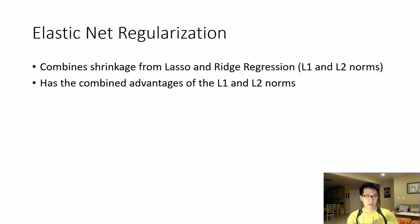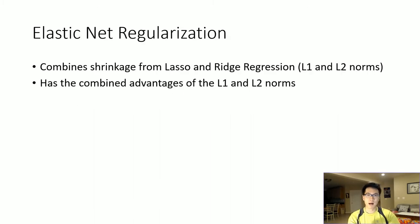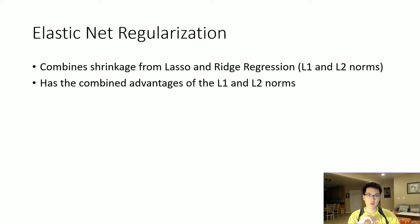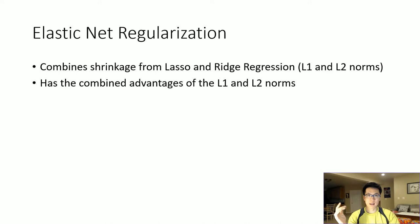It combines the shrinkages from lasso and ridge, and has the combined advantages of the L1 and L2 norms. But what are the benefits of using an elastic net?